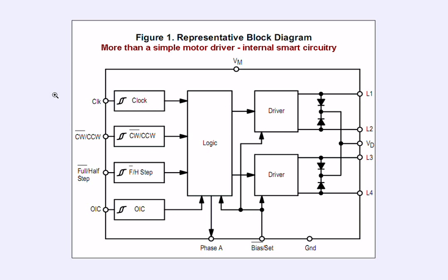Pictured here is basically the logic block diagram. On the left side, you have a clock input with a positive-going edge trigger. The clock will give you a step. A low will give you clockwise, a high will give you counterclockwise. A low is full step, high is half step, and the OIC is output impedance control.